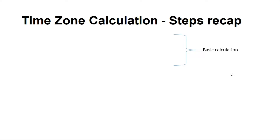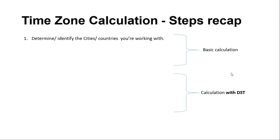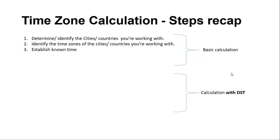The first step is to determine or identify the countries you are working with. Step two is to identify the time zones of those countries. Step three is establishing the known time, which is generally given in the scenario. Step four is to identify the time difference between the countries you are working with.